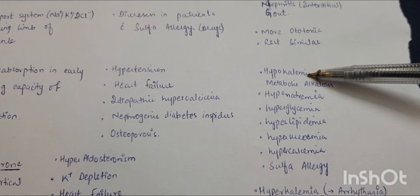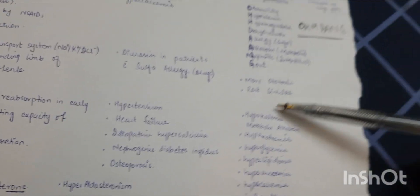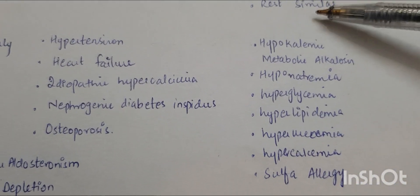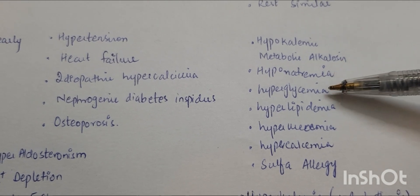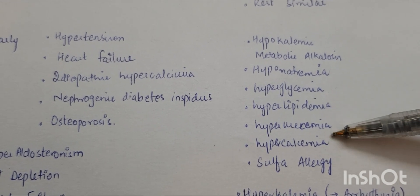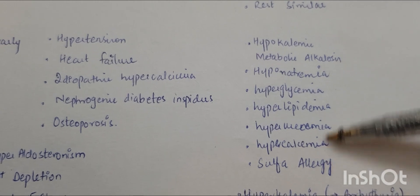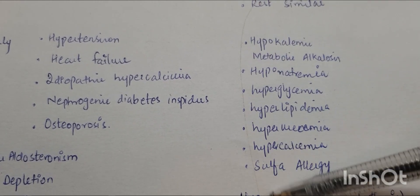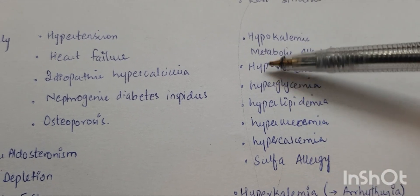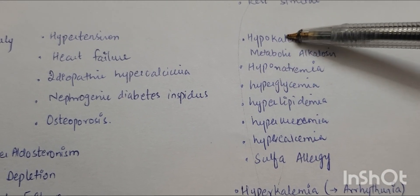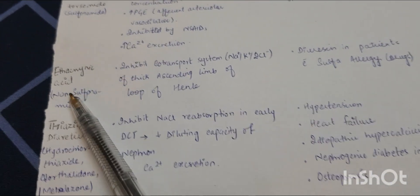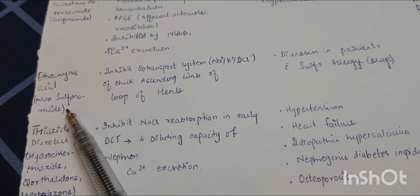Adverse effects of thiazides include hypokalemia, metabolic alkalosis, hyponatremia, hyperglycemia, hyperlipidemia, hyperuricemia, hypercalcemia, and sulfa allergy. A useful memory aid: they are all 'hyper' except for hyponatremia and hypokalemia.